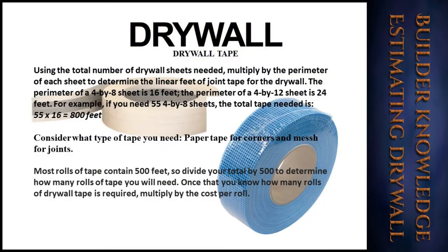Using the total number of drywall sheets needed, multiply by the perimeter of each sheet to determine the linear feet of joint tape required. The perimeter of a 4×8 sheet is 16 feet, and the perimeter of a 4×12 sheet is 24 feet.